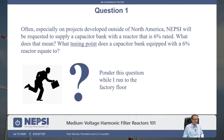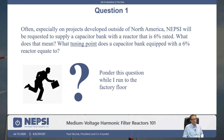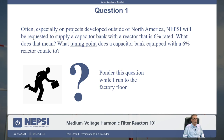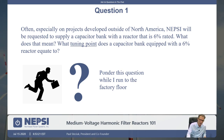I'm going to run out to the shop and ask you to ponder a question. Often, especially on projects developed outside North America, NEPSI will be requested to supply a capacitor bank with a reactor that is 6% rated — sometimes 5% or 7% rated, using this percent-rated concept. What does that mean? And what tuning point does a capacitor bank equipped with a 6% reactor equate to? Think about that and I'll be back in just one minute.